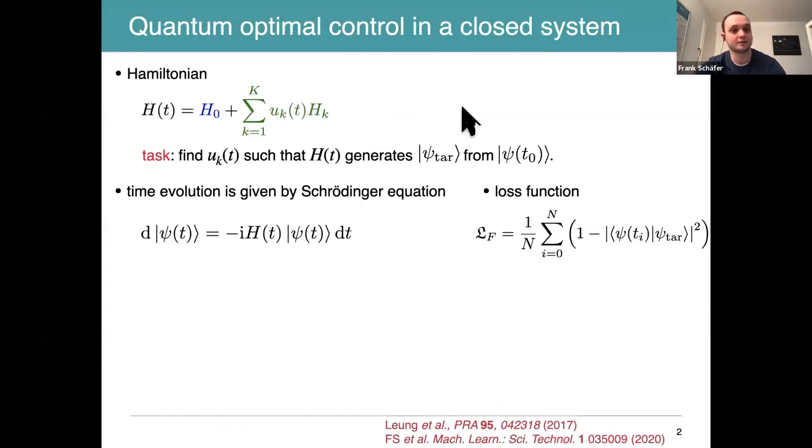Let me start by motivating the quantum optimal control setting in a closed system. Suppose you have some Hamiltonian H(t), which can be decomposed into a drift term H naught, intrinsic to your physical system which you cannot manipulate, and the control part, which consists of control operators HK and control drive values UK of t. The task in quantum optimal control is to find these drive amplitudes UK(t) such that your Hamiltonian H(t) generates some interesting target state, which could be relevant for quantum information processing tasks, starting from some initial state.